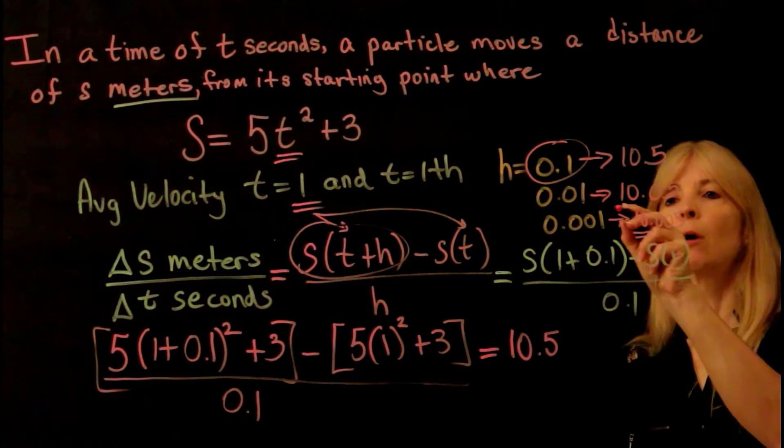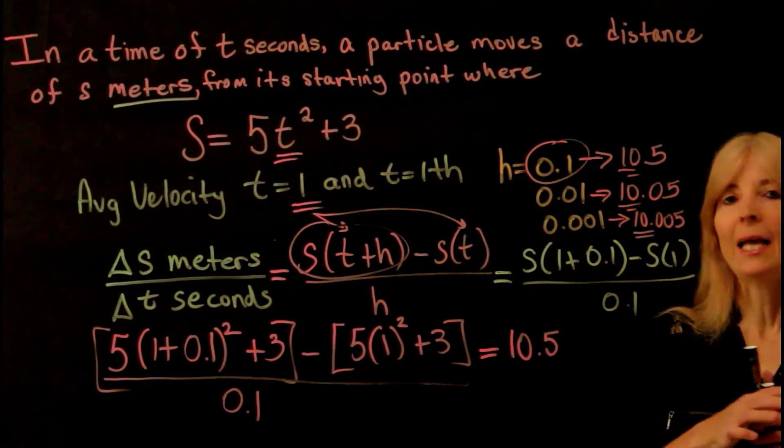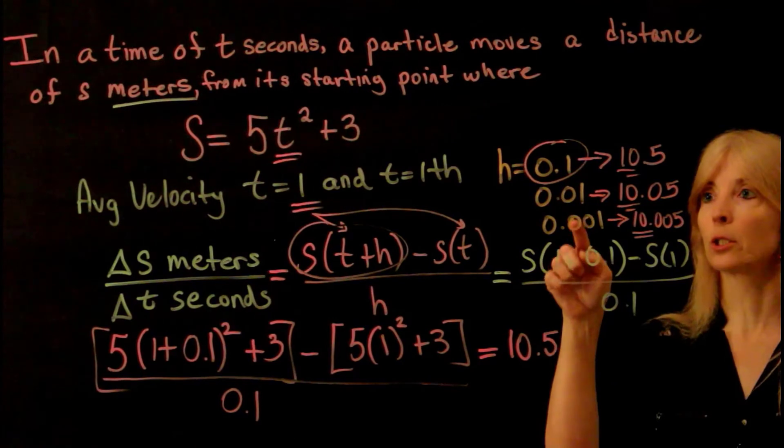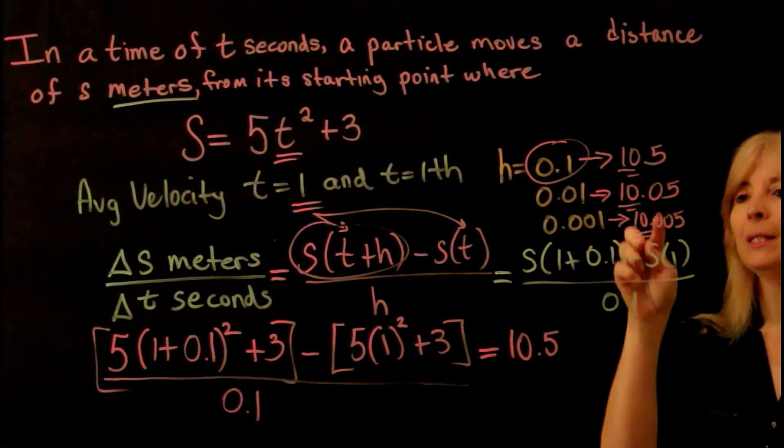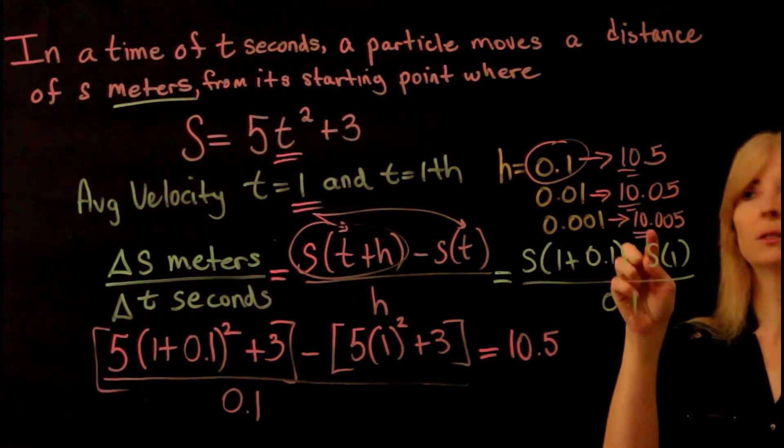And what they're trying to show you is as h gets smaller, and smaller, and smaller, it looks like my limiting value is going to 10.